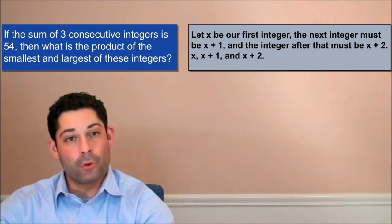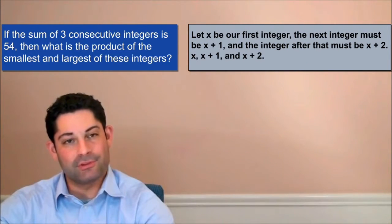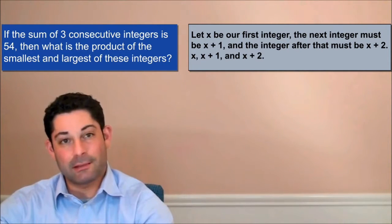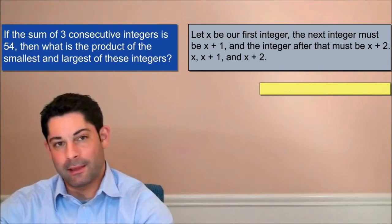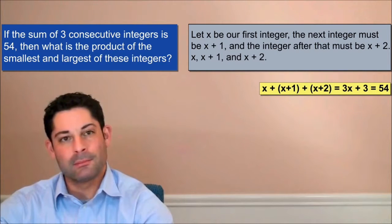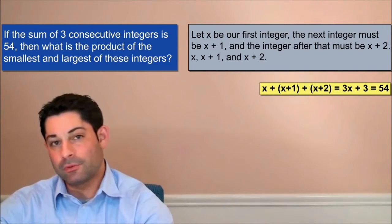Next, we're told that the sum of these integers is equal to 54. So let's add them up and set them equal to 54. x plus x plus 1 plus x plus 2 equals 3x plus 3 equals 54.